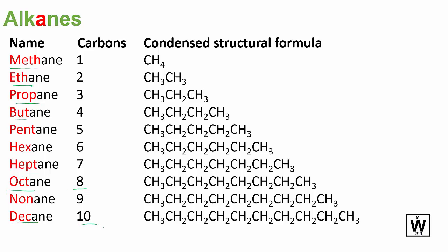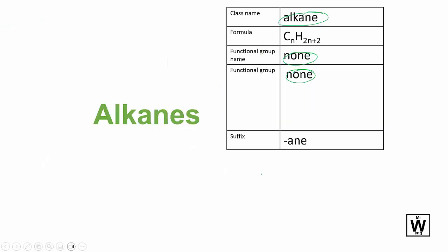An alkane is basically a molecule where each carbon has four bonds and it's completely saturated — they're all single bonds, completely saturated with hydrogens. The only difference across the homologous series, as with all homologous groups, is that you're just adding an extra carbon — an extra CH2 — progressively across the series.